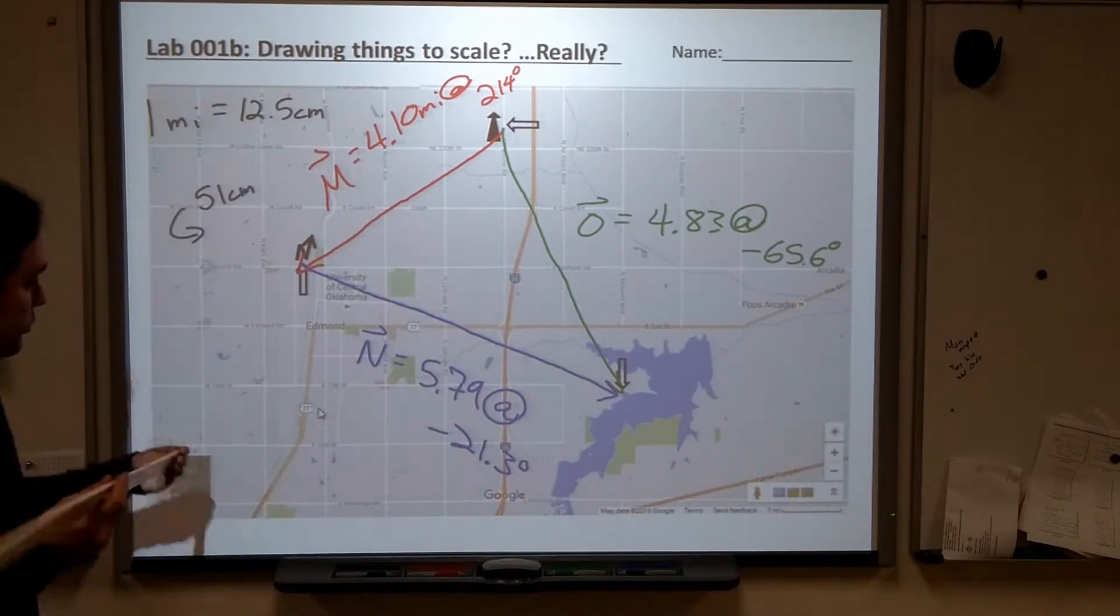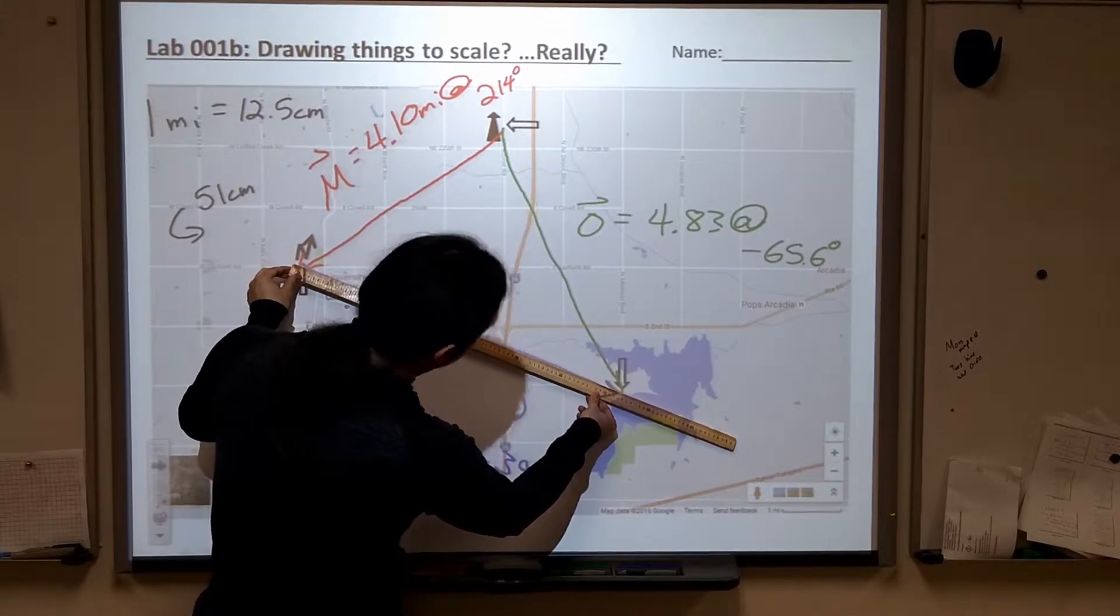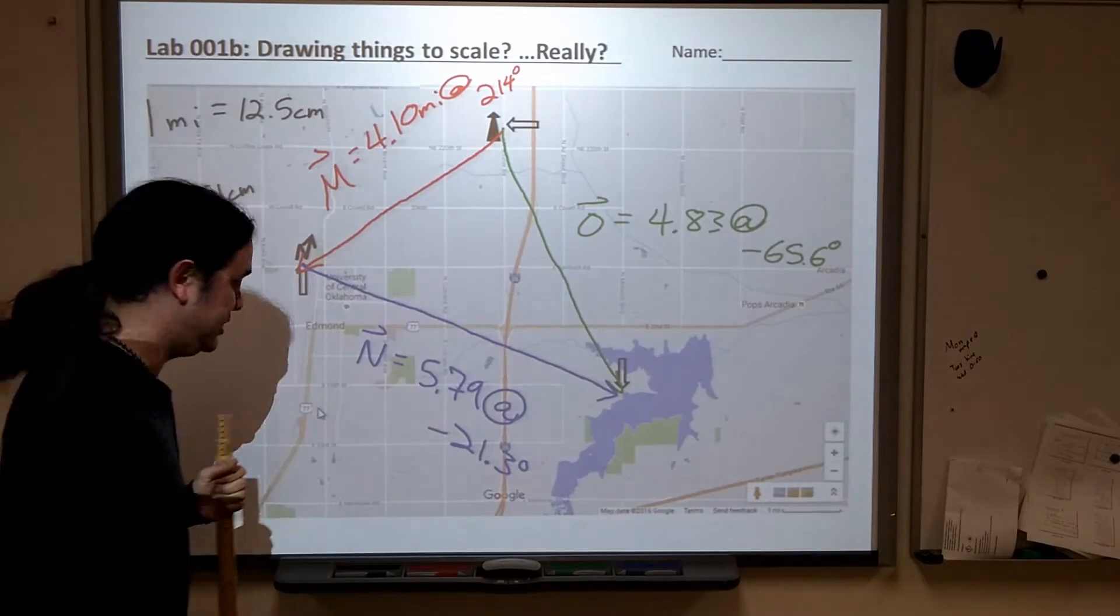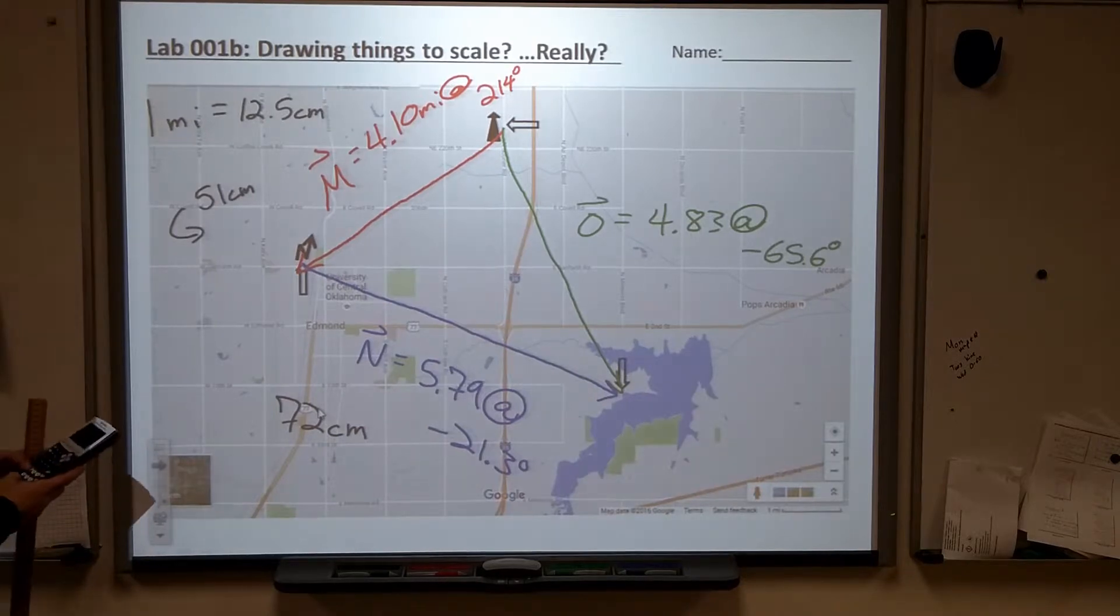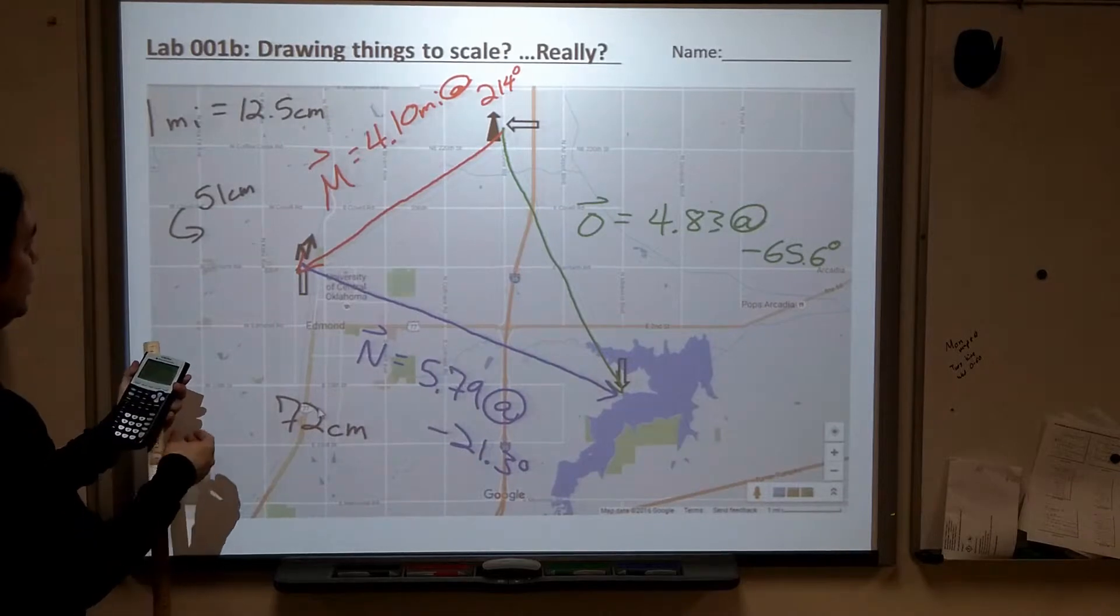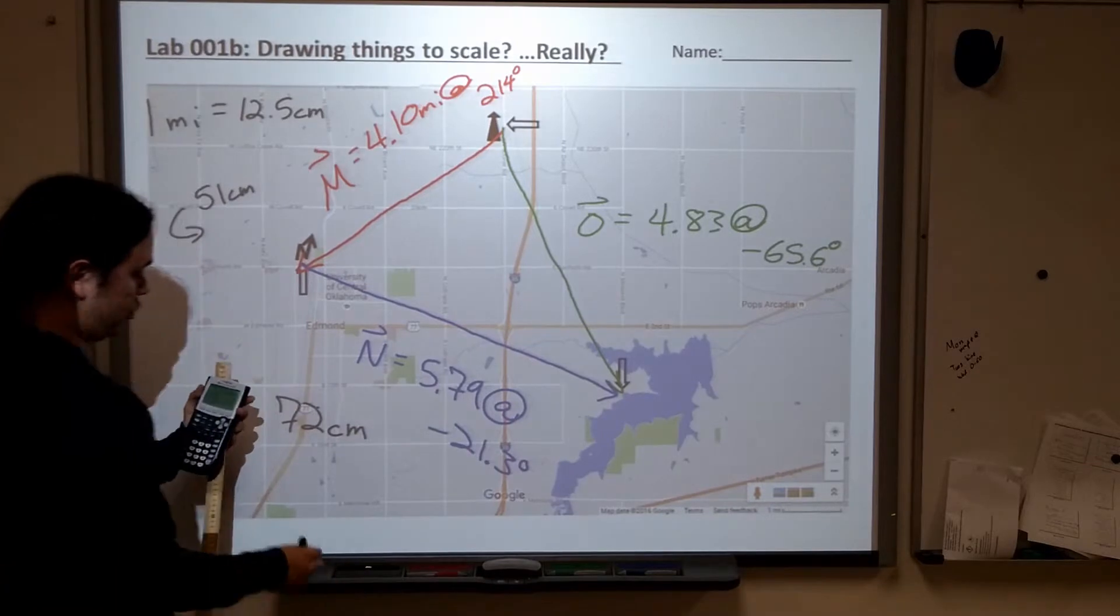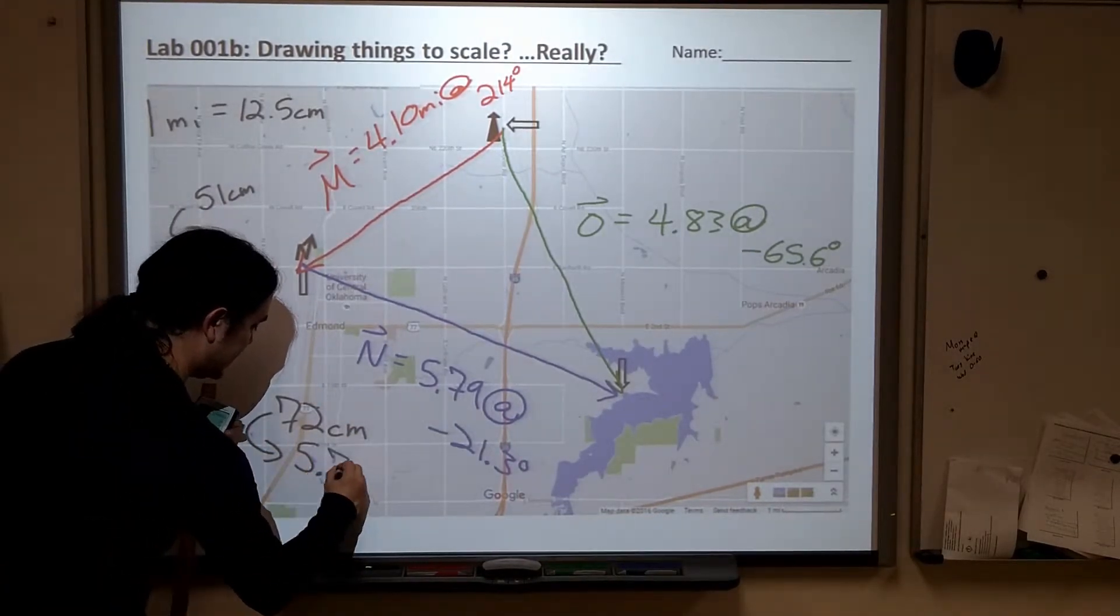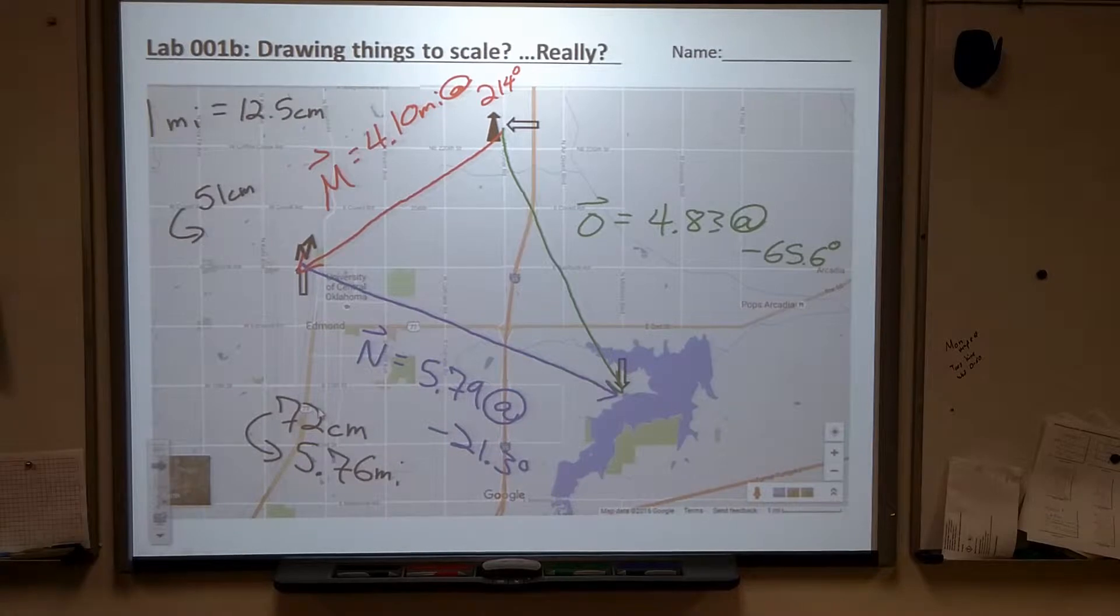Let's check one of the other ones. All right? I'm going to measure it from here down to here. That's about 72 centimeters. Let's try that again. All right. 72 centimeters divided by 12.5, because every 12.5 centimeters is one mile. 72 centimeters on my big projected screen means that this becomes 5.76 miles. We predict 5.79. We are very, very close.